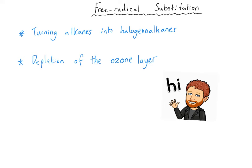Hello everybody, and welcome to another A-level chemistry video. In this video we're going to be looking at free radical substitution. We're going to be covering two things: the formation of halogenoalkanes using alkanes, and then one of the effects of this type of reaction, which is depletion of the ozone layer.